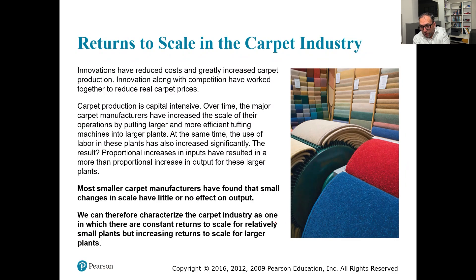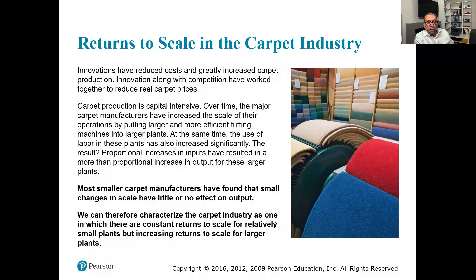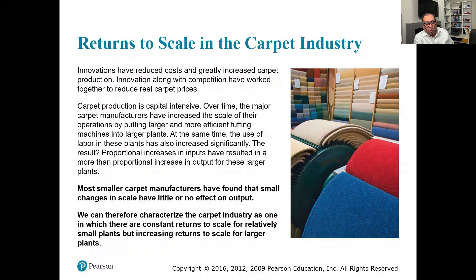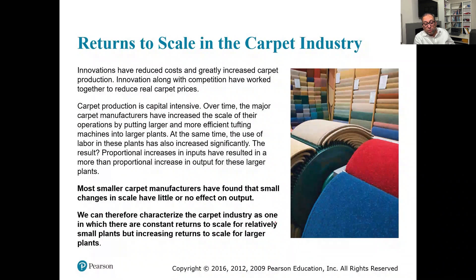A practical example is the carpet industry. Innovations have reduced costs and increased carpet production. The major carpet manufacturers increased the scale of their operations by putting larger and more efficient tufting machines into larger plants, while labor use also increased significantly. The proportional increase in inputs resulted in a more than proportionate increase in output — exhibiting increasing returns to scale. Smaller carpet manufacturers found that small changes in scale had little or no effect on output, showing constant returns to scale. So the carpet industry exhibits constant returns to scale for relatively small plants but increasing returns to scale for larger plants.